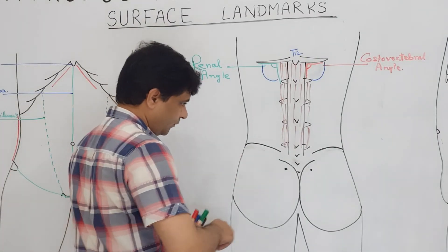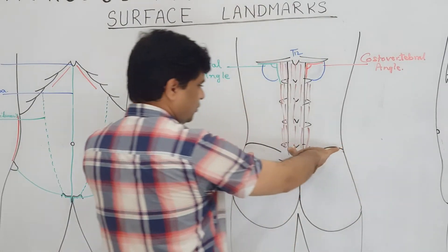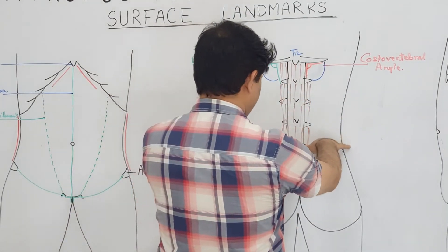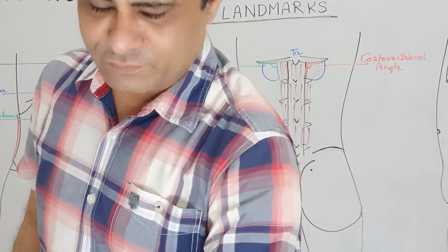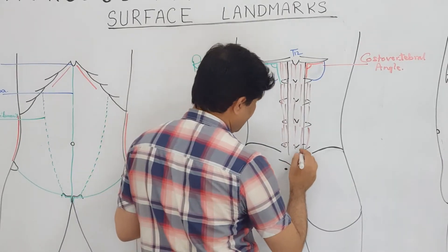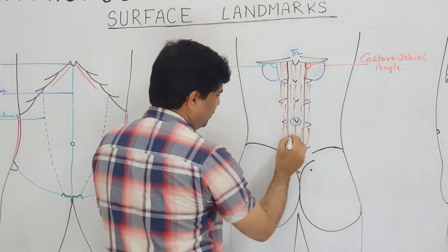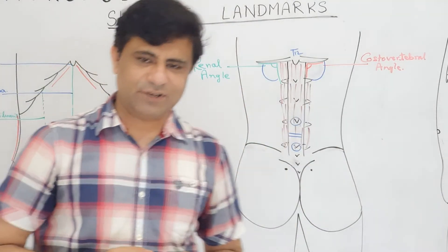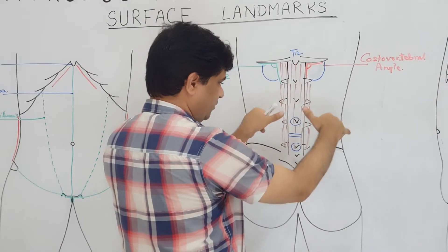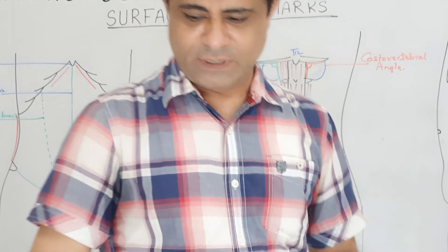For lumbar puncture, you palpate the iliac crests. When you palpate the highest point of the iliac crest, the spine that lies at that level is the fourth lumbar spine. So L4 is at the level of the highest point of the iliac crest, and L3 is above it. The intervertebral disc is between L3 and L4. You can palpate the third spine with your thumb, and ask the subject to bend forward to reach the space between the third and fourth vertebrae.